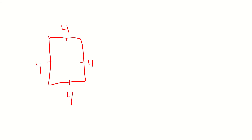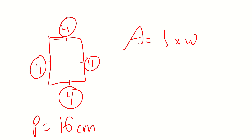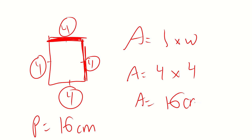So a couple things, guys — think of it as a square with 4 centimeters on each side. The area is not going to be adding all these fours together — that's the perimeter, so the perimeter here would be 16. The area is taking the length times the width. My length is this top one, we have the number 4, so A equals 4 times the width, and the width is also 4. So area is 16 centimeters squared.